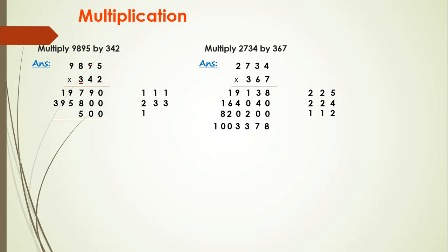3×9 = 27, 27 plus 1 = 28, write 8 here, carry 2. 3×8 = 24, 24 plus 2 = 26, write 6 here, carry 2. 3×9 = 27, 27 plus 2 = 29. We got the product of 2, 4, and 3.